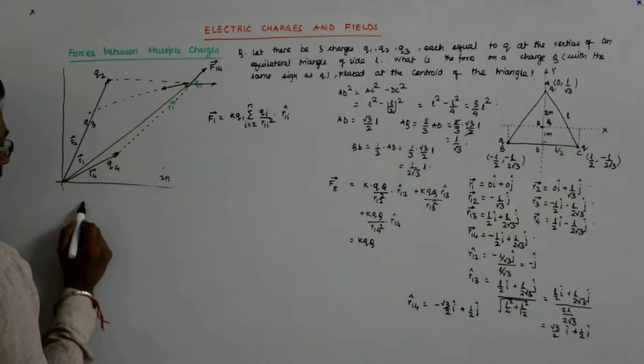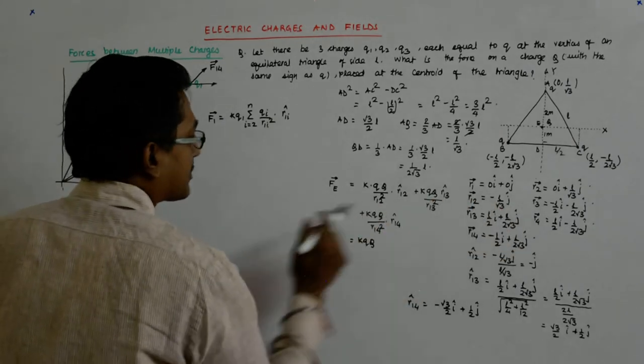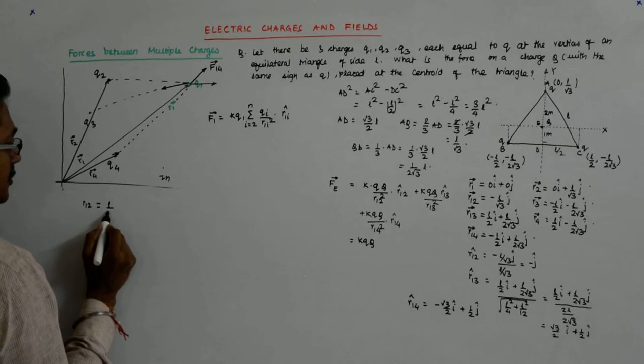Now, what is R12? R12 is mod of this, which is L upon root 3.